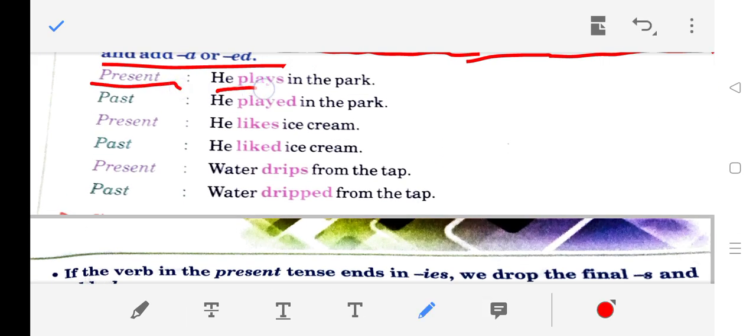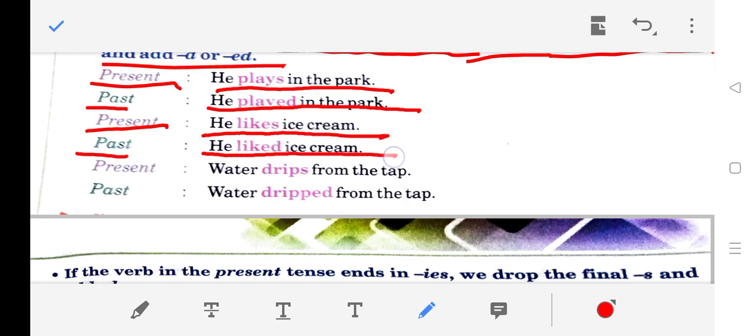Present: He plays in the park. Past: He played in the park. Present: He likes ice cream. Past: He liked ice cream. Present: Water drips from the tap. Past: Water dripped from the tap.